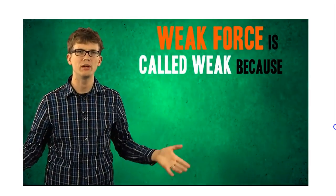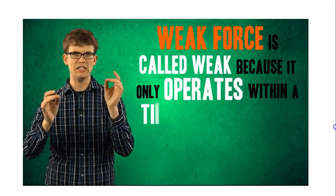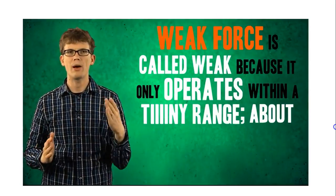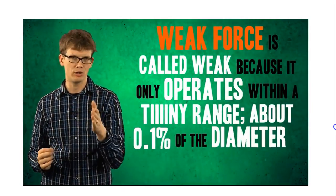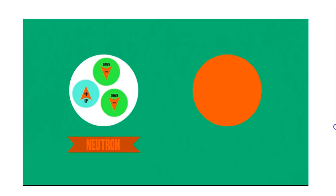The weak force is called weak because it only operates within a teeny tiny range, about 0.1% of the diameter of a proton. So say our neutron comes close enough to a neutrino. A positively charged W boson would travel from the neutrino to that neutron. That's the weak force, right there. The neutrino, having lost a positive boson, becomes negatively charged, turning it into an electron.